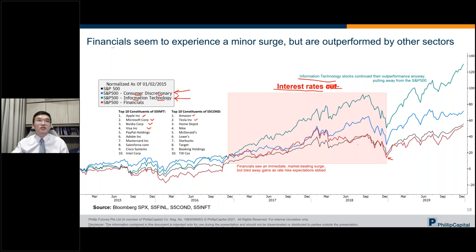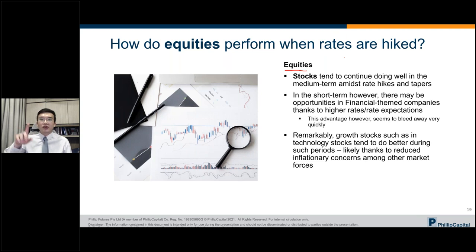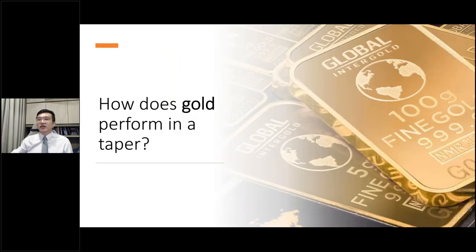To summarize on equities: stocks in general tend to continue doing well in the medium term despite the direction of taper or rate hikes compared to bonds and cash. Short-term, financial companies do tend to do better, but that advantage bleeds away very quickly. If you're considering a long-term position in financials, there will be at least quite a lot of volatility around rate hike periods. Growth stocks tend to do better than financial stocks over time.